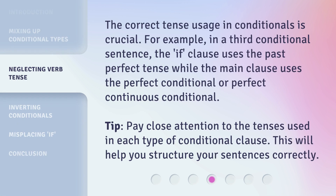The correct tense usage in conditionals is crucial. For example, in a third conditional sentence, the if-clause uses the past perfect tense, while the main clause uses the perfect conditional or perfect continuous conditional. Tip: pay close attention to the tenses used in each type of conditional clause.